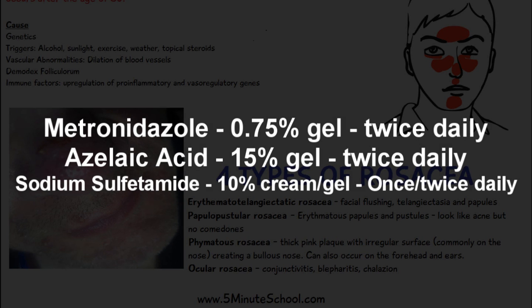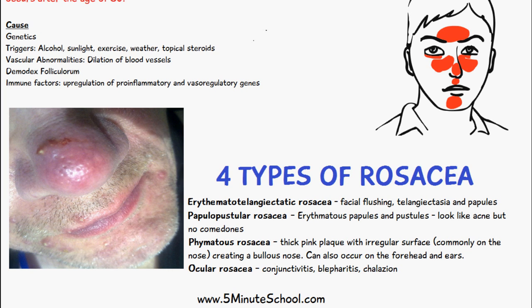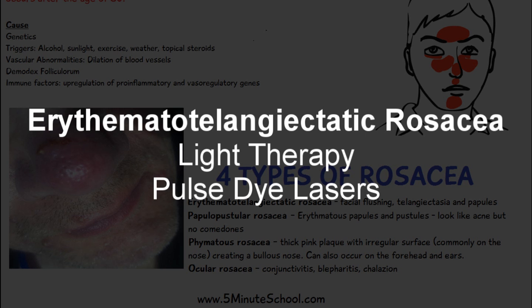For erythematotelangiectatic rosacea, which involves significant flushing and redness, the treatment method is usually light therapy or pulsed dye lasers.